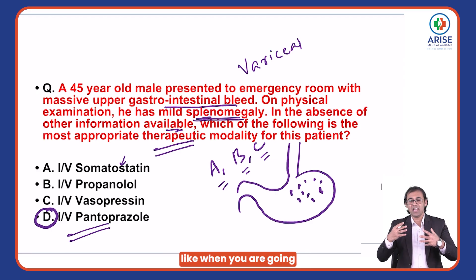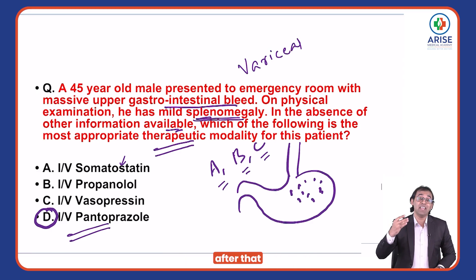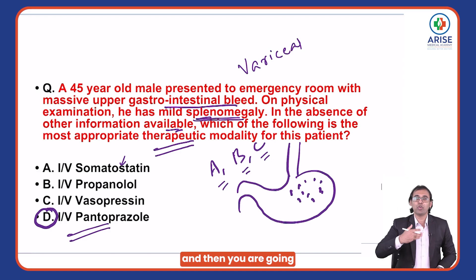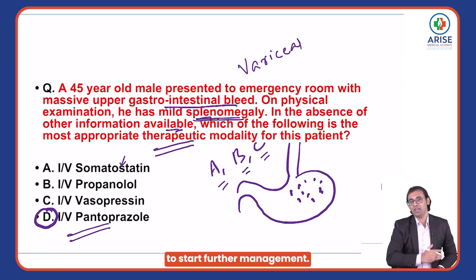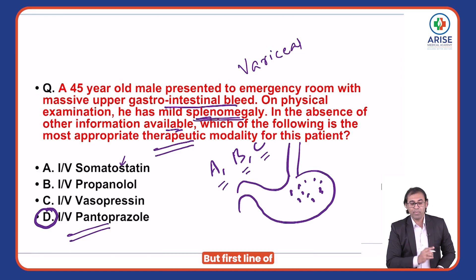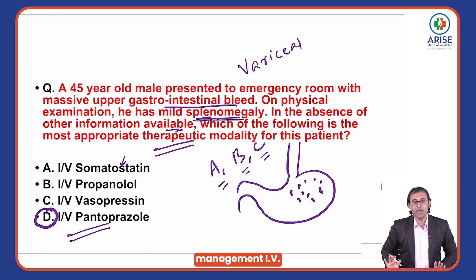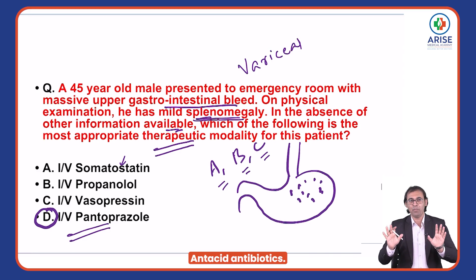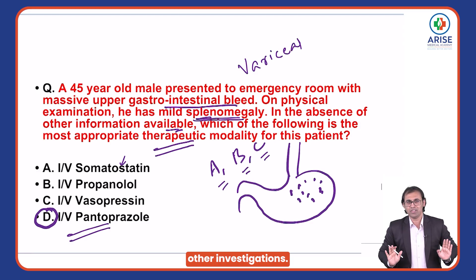After that, when you are going to stabilize the patient, you are going to take further investigations and then start further management. But the first line of management is: IV fluids, antacid, antibiotics — after that, you are going to start other investigations. Easy to understand?